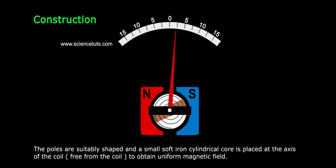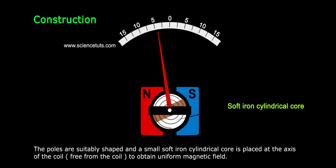The poles are suitably shaped and a small soft iron cylindrical core is placed at the axis of the coil, free from the coil, to obtain uniform magnetic field.